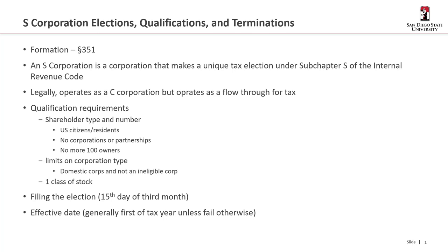To be an S-corporation, the corporation can only have shareholders that are U.S. citizens and residents — so no foreign shareholders. It can't have corporations or partnerships as shareholders, and it can't have more than 100 owners, which generally speaking is going to restrict any public company from being an S-corporation.